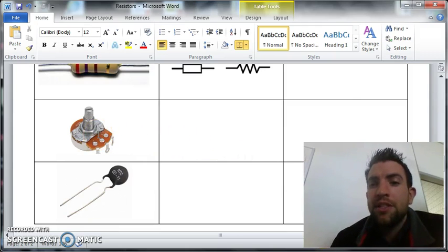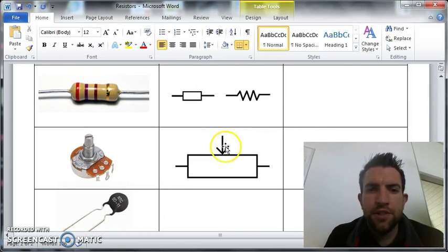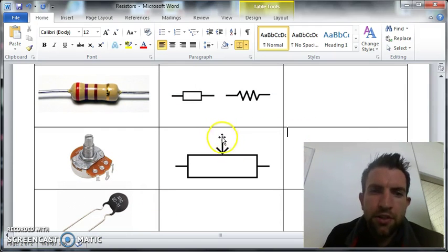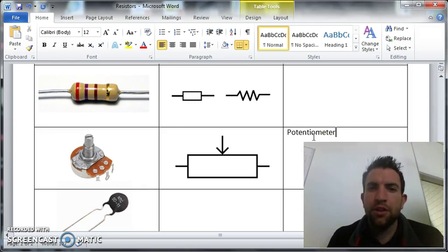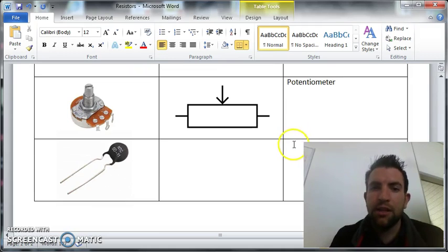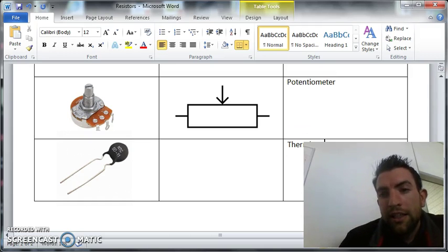This component has a couple of names - it's known as a variable resistor or potentiometer. This is the symbol for the potentiometer, with an arrow coming into the side. The last one is called a thermistor - a resistor where the value can change.